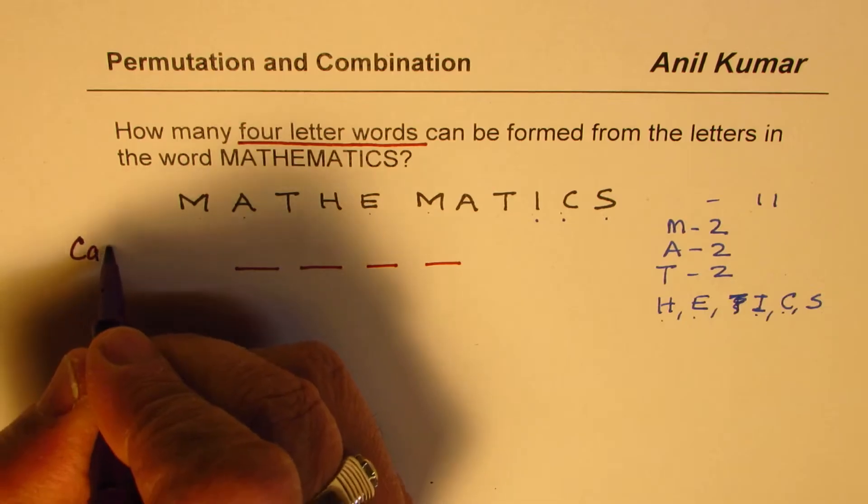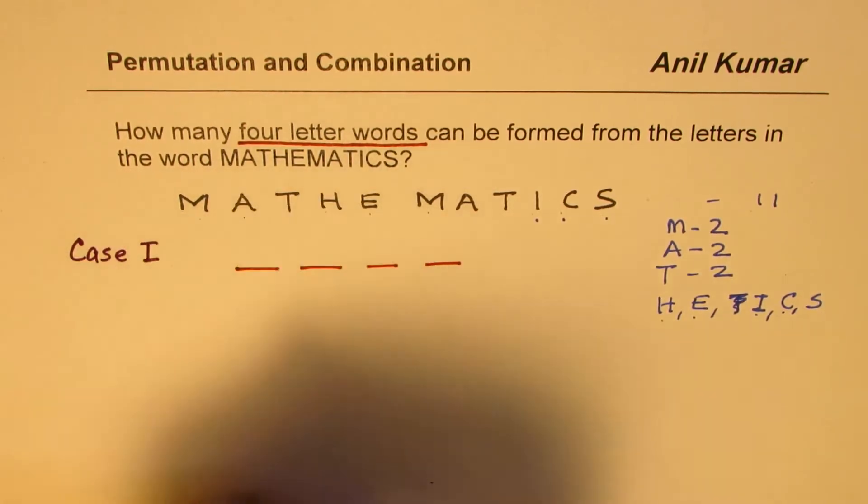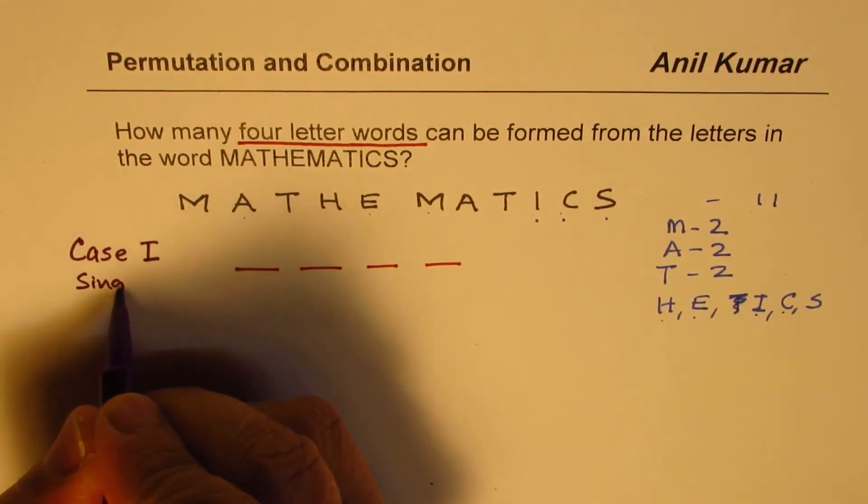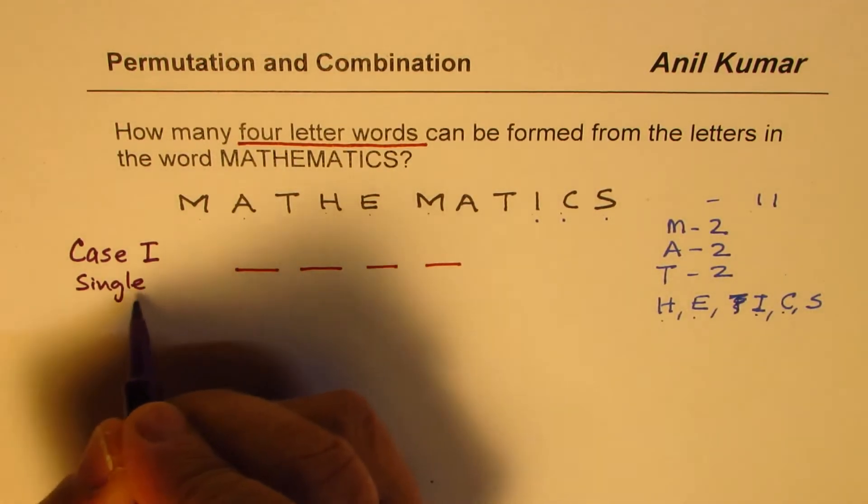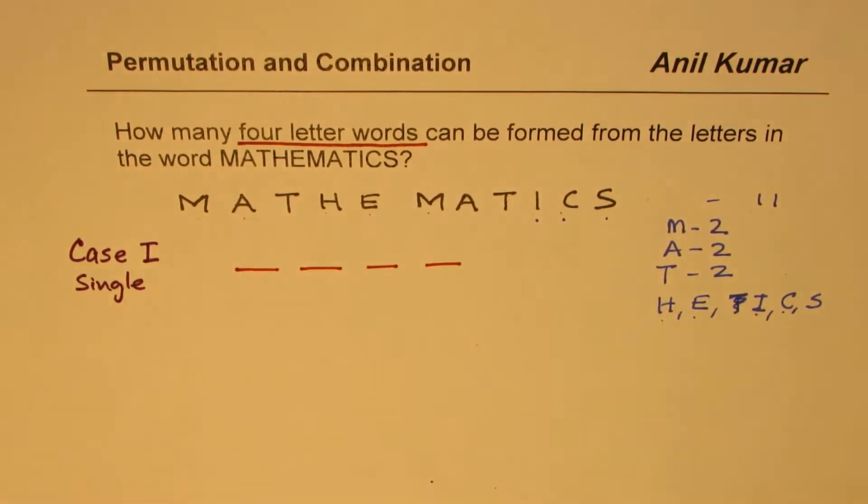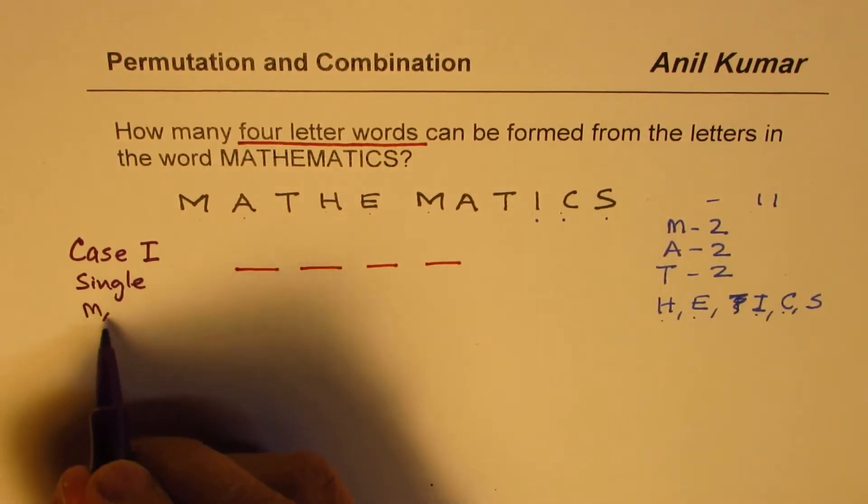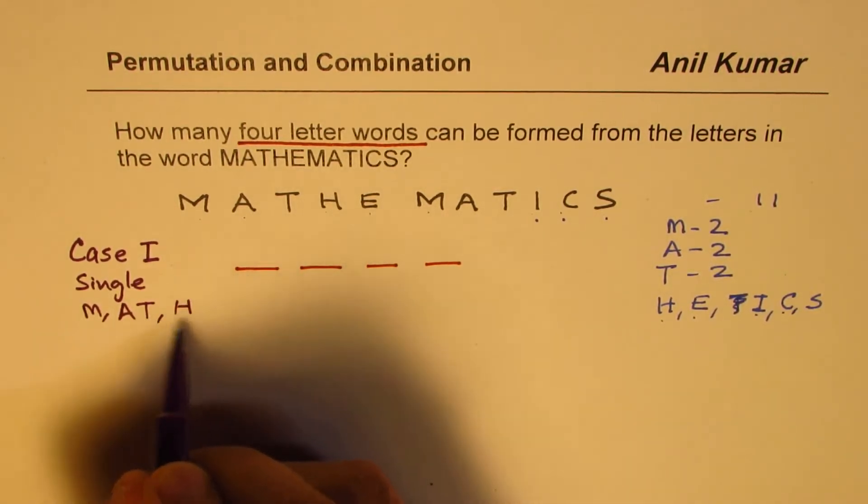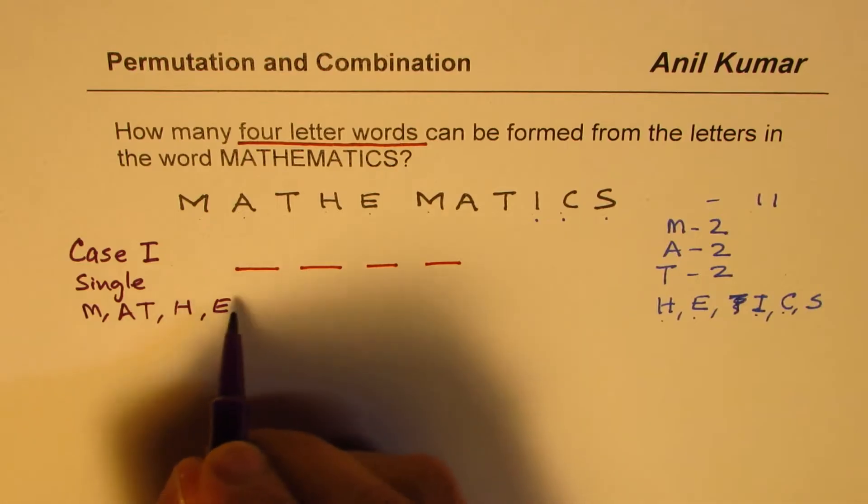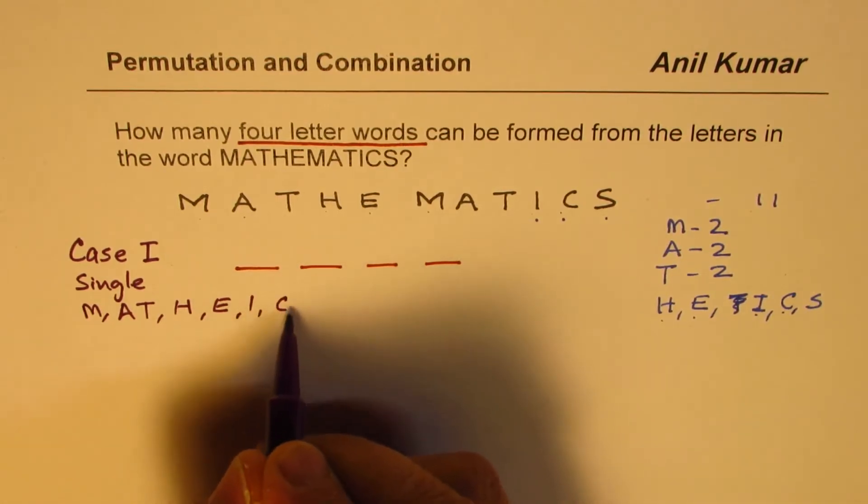We say case one. Case one is all single letters, no repetition. So case one is all single letters. So if we have all single letters, then the combinations we can have is from M, A, T, H, E, I, C and S, correct?